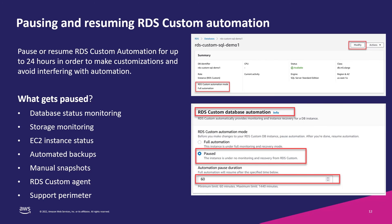Pausing automation ensures that your customization does not interfere with RDS Custom automation, and similarly the automation does not affect your changes. For example, if you install an application that requires the database to go offline and you don't pause automation, our automation will detect that something has gone wrong and try to bring the database back online, which may inadvertently roll back some of the changes you just made. You can pause or resume RDS Custom automation using the AWS Console or AWS CLI for up to 24 hours, with a minimum of 60 minutes. When automation is paused, database status monitoring, storage monitoring, automated backup, and RDS Custom agents are among the activities that get paused. You simply modify the instance and change the automation to the desired mode.